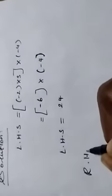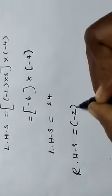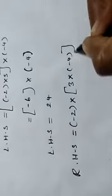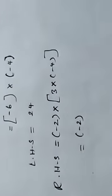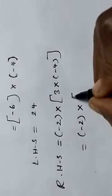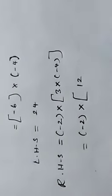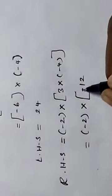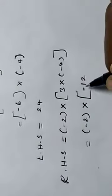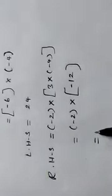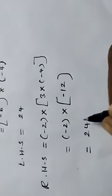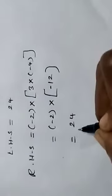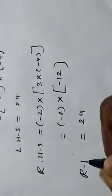Now we take the right-hand side values. RHS equals minus 2 into (3 into minus 4). First we find the bracket inside values: 3 into minus 4 — 3 fours are 12, and plus into minus gives minus 12. Then minus 2 into minus 12: 12 twos are 24, and minus into minus gives plus. So RHS equals 24.